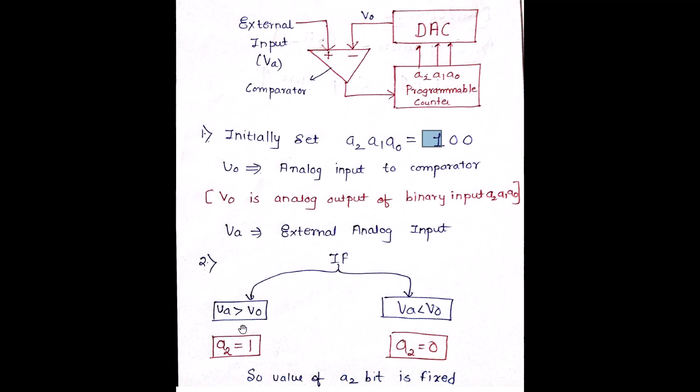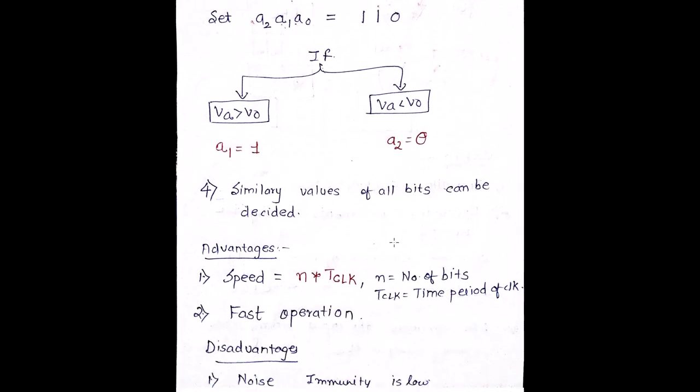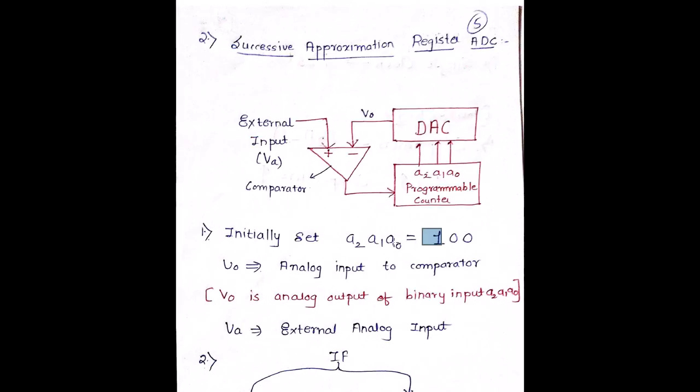Then it is compared with VA. If it is greater, it is 1. If VA is smaller than V0, it is 0. Then my A2 is set as 1, and then my A1 I am assuming it as 1, it can be 0 as well. Then again I am doing this kind of comparison. And make this correction over here, it is A1 as 0. Similarly, all the bits can be decided. The advantage and disadvantage is given over here.